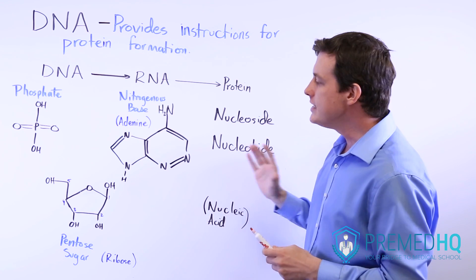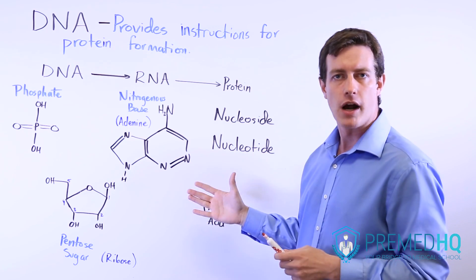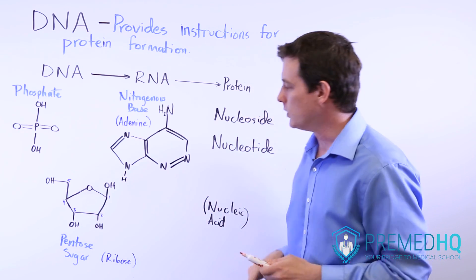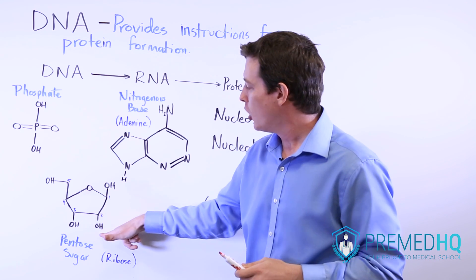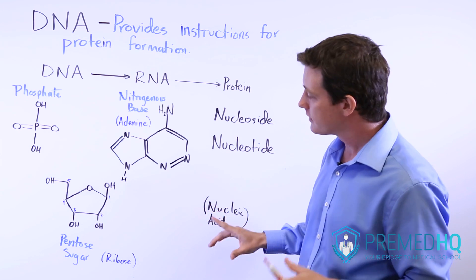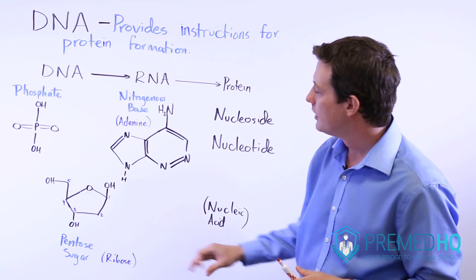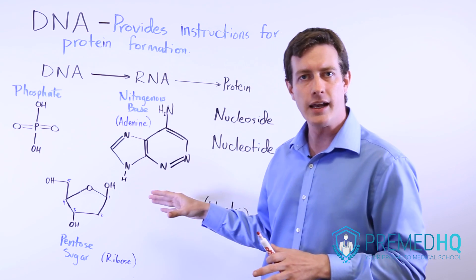For DNA, the pentose sugar that you'll use is going to be deoxyribose. Here I've drawn a ribose molecule. Ribose is a five-membered pentose sugar with an OH group here on the second carbon. In order to make it deoxyribose, we remove this OH group. So now this is deoxyribose, which is the sugar you use in DNA.